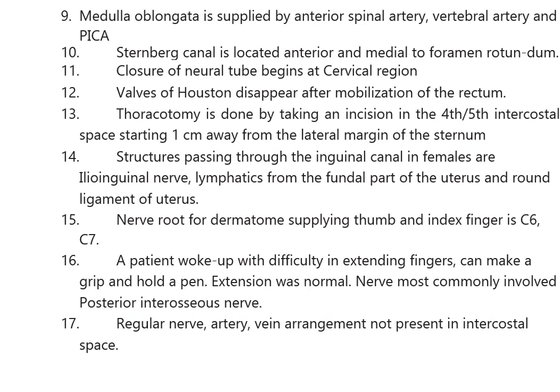Structures passing through the inguinal canal in females are: the ilioinguinal nerve, lymphatics from the fundal part of the uterus, and the round ligament of the uterus. The nerve root for dermatome supply to the thumb and index finger is C6 and C7.